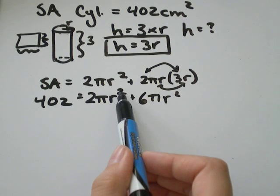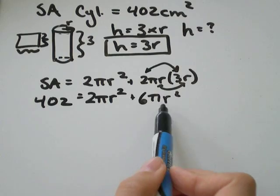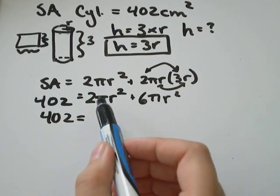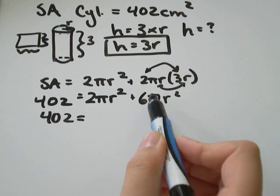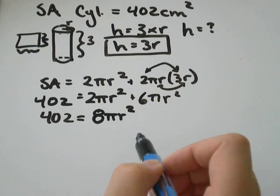This is good because we've got r² times some decimal number plus r² times some decimal number. All you need to do now is collect like terms. 2πr² plus 6πr² will be 6 plus 2 is 8πr².